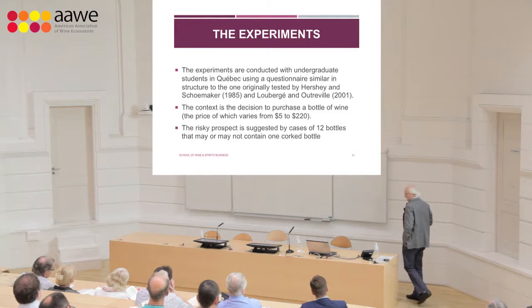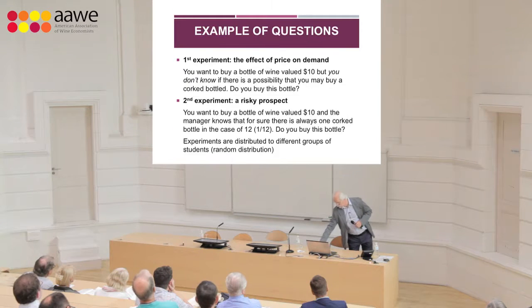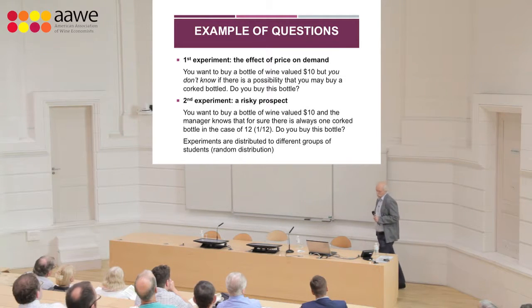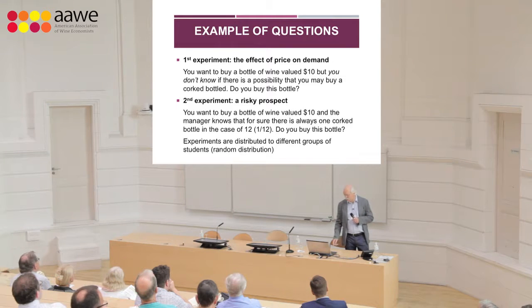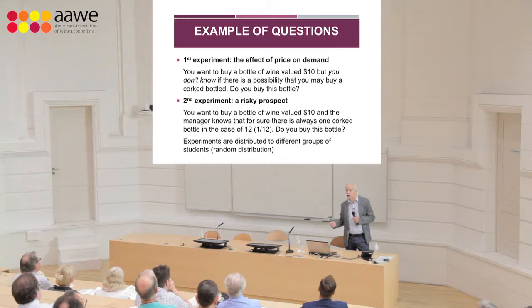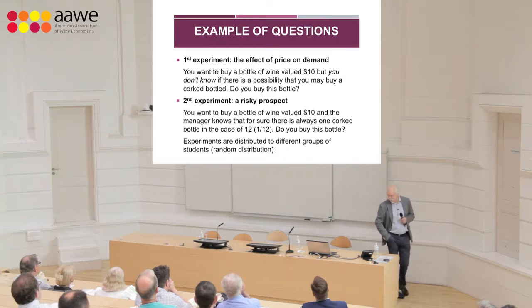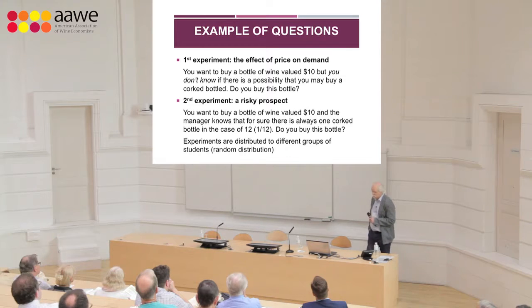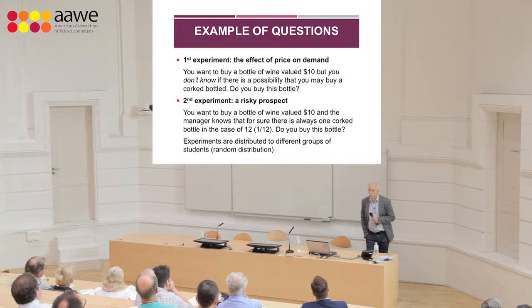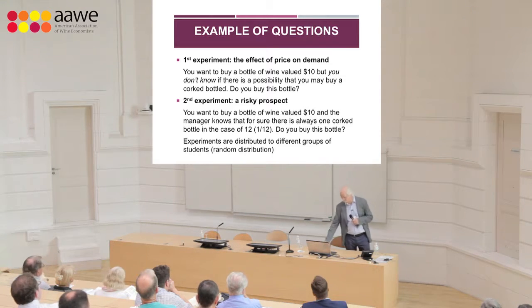The risky prospect was a case of 12 bottles. Here is an example question: you want to buy a bottle of wine valued at $10, but you don't know if there is a possibility that you may buy a corked bottle — do you buy the bottle? There is only one answer possible: yes or no. Students have no possibility to change their mind later. In the risky prospect version, the question states that the manager knows for sure there is always one corked bottle in the case of 12, so you know the exact probability.